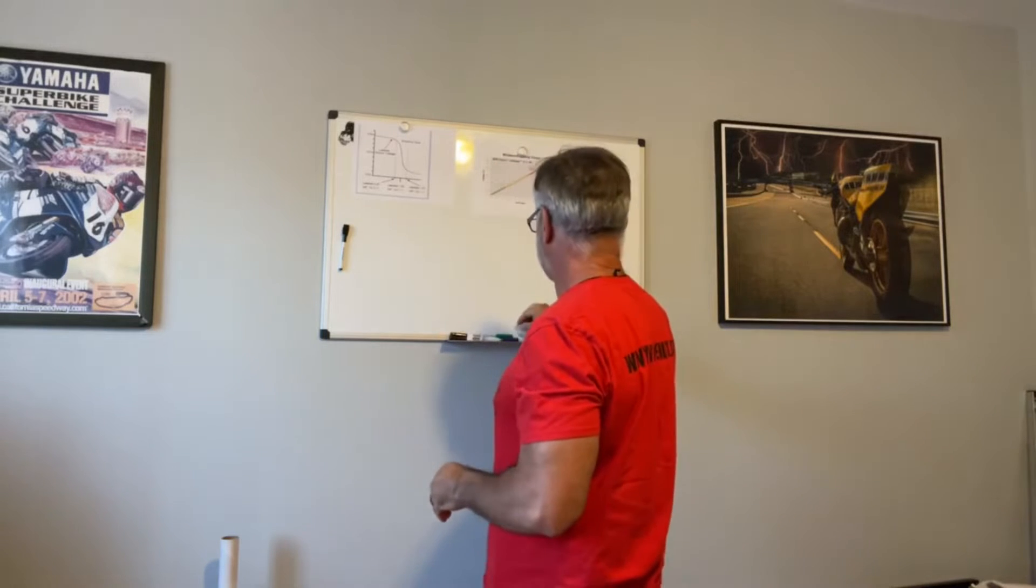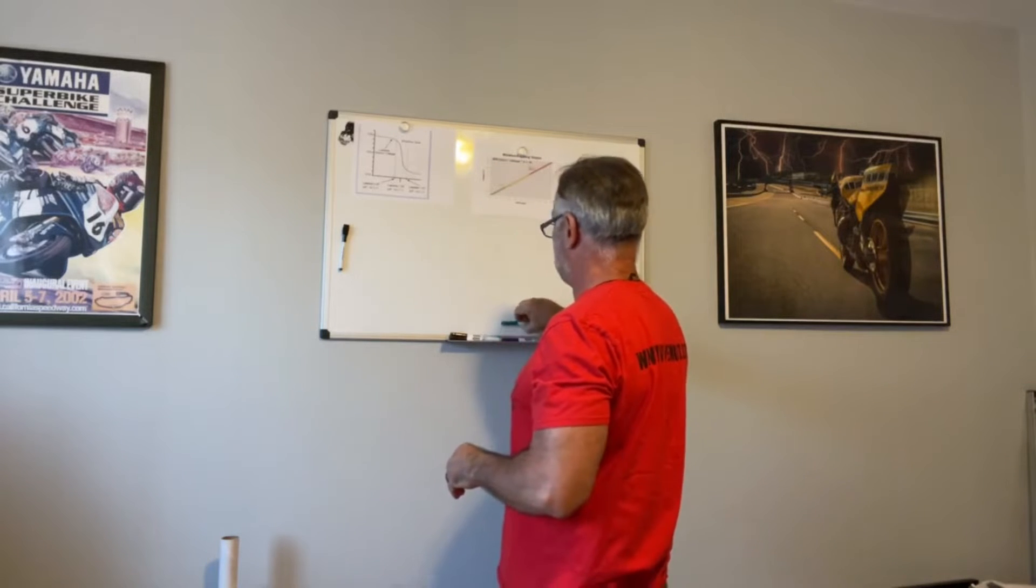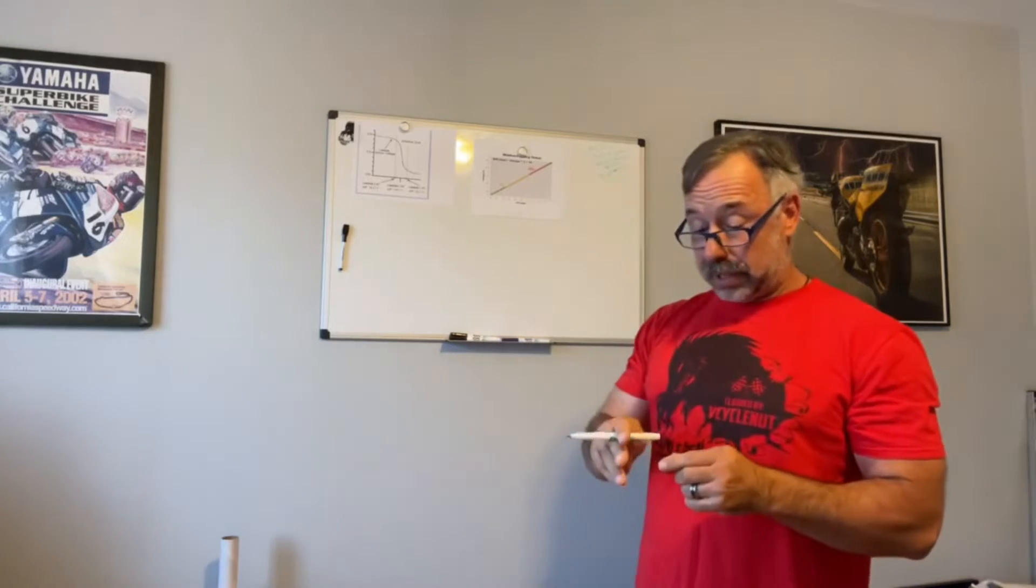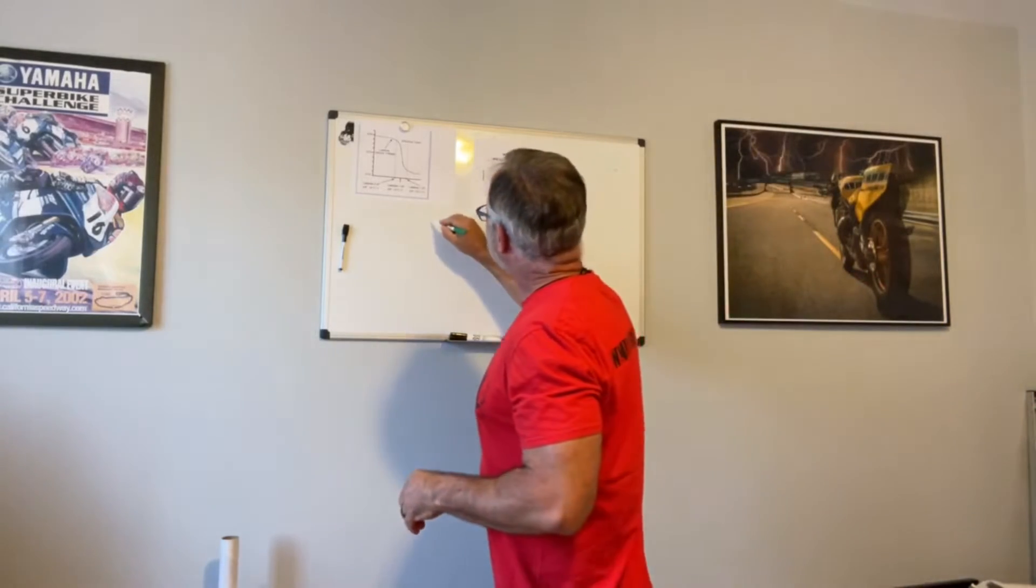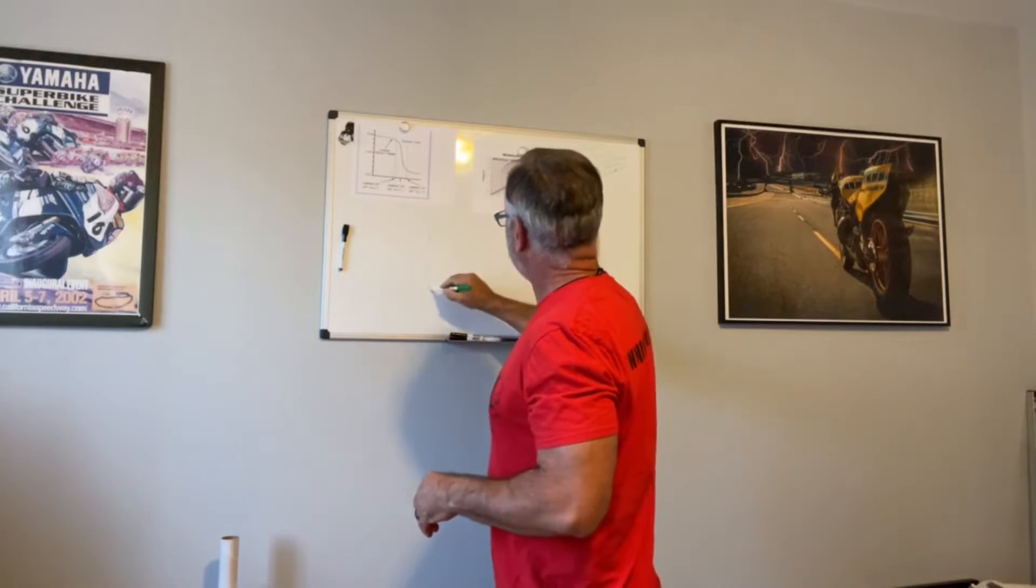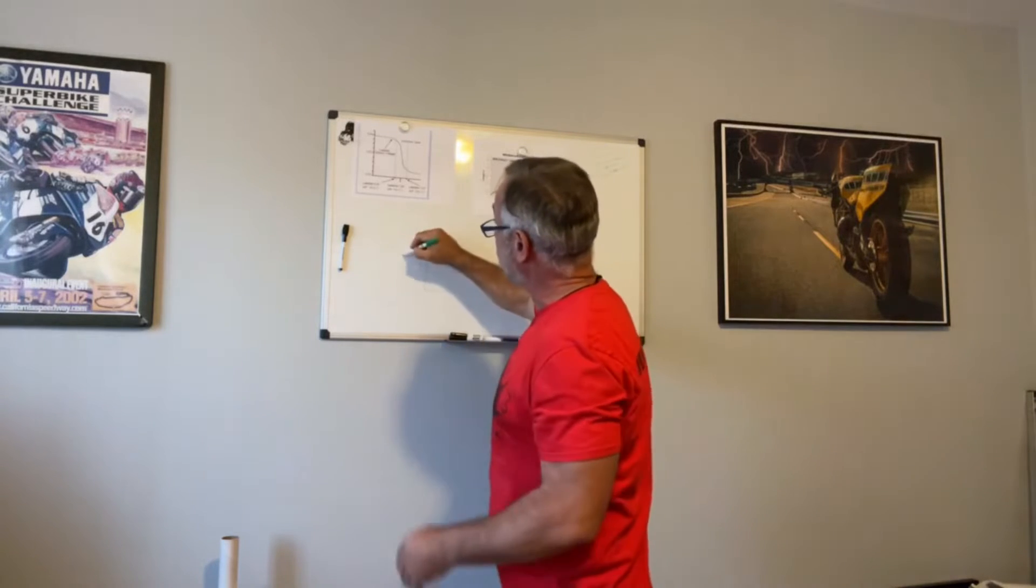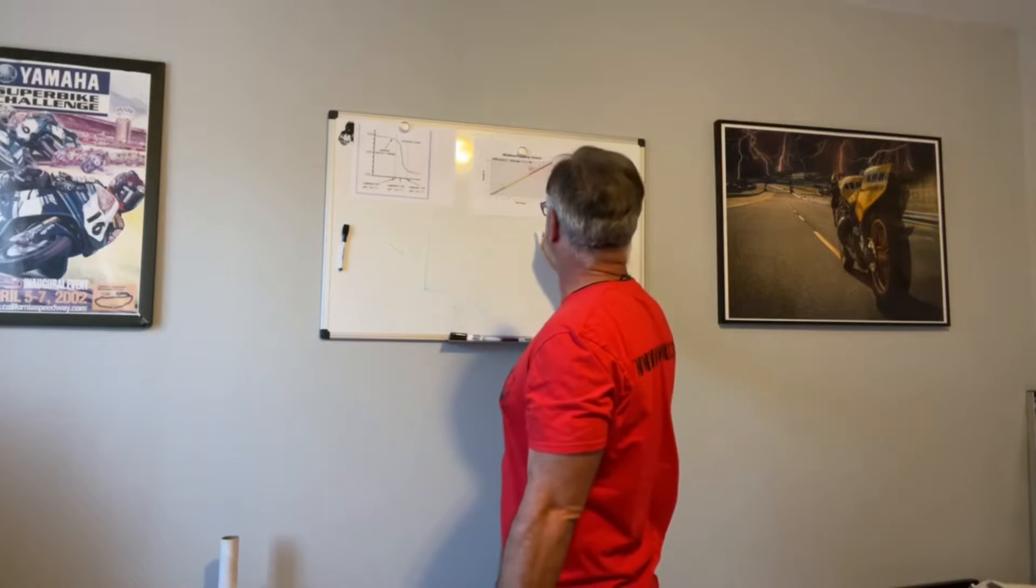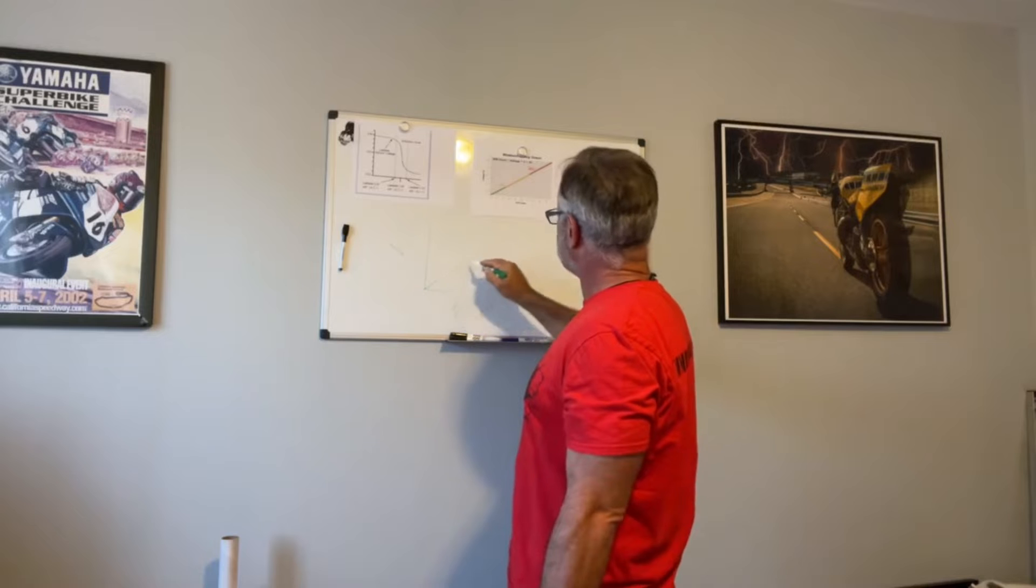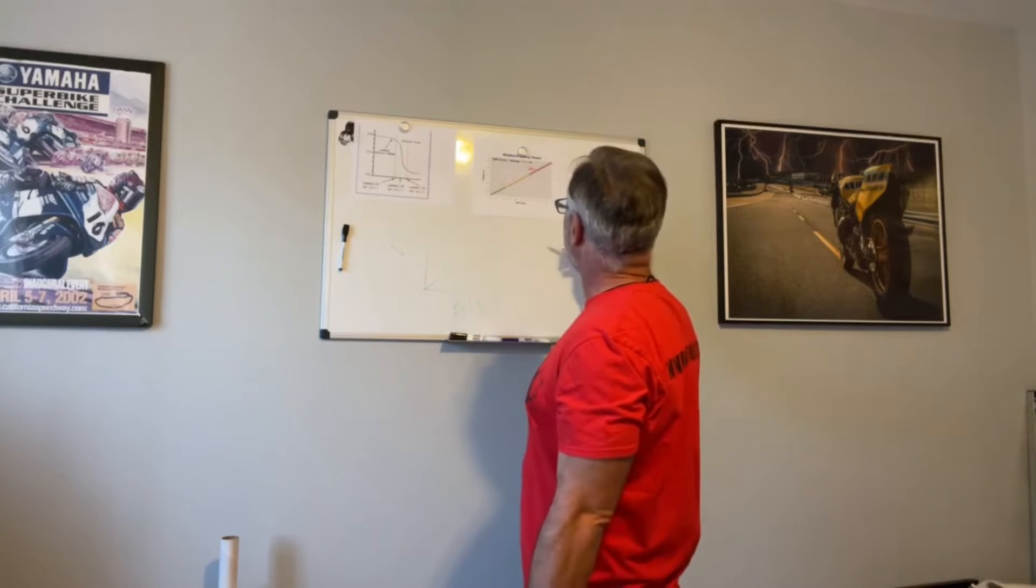So an O2 sensor is a type of galvanic cell, and I'm going to start right off, like if I say something wrong, it's too bad. So if we plotted voltage over air fuel ratio, this might not be exactly representative of what it is, but you get a nice linear line, right?